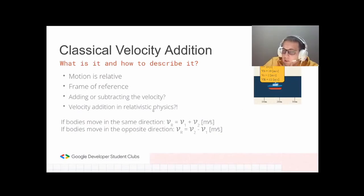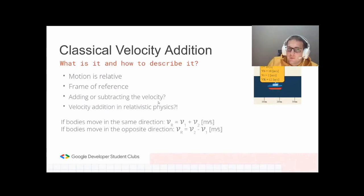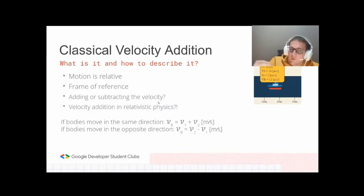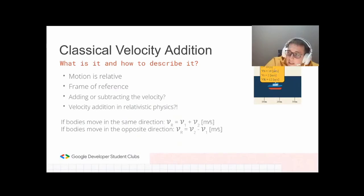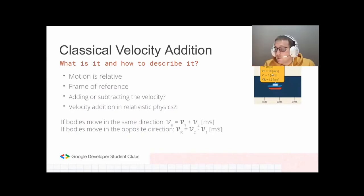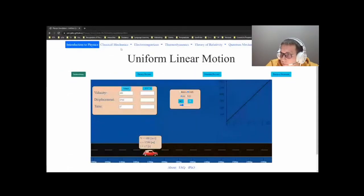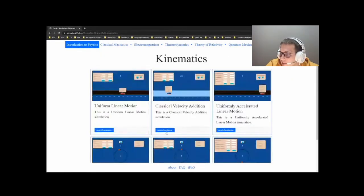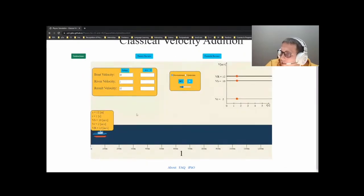If the boat sails upstream, the river works against it — the resulting velocity is the boat's velocity minus the river's velocity. So if the boat is 10 and the river is 2 going upstream, the resulting velocity is 8, not 12. Let's check the simulation — downstream gives a resulting velocity of 12. Changing the river's velocity to 5 gives a resulting velocity of 15.